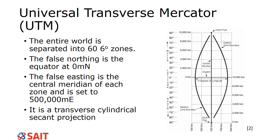You can imagine 60 cylinders rotating around the earth, each fitting a different zone. As shown in this diagram, each zone has a slight curve to it. When wrapping the cylinder around, distortion is reduced by making it larger at certain points - top and bottom. The false northing is set at zero meters.